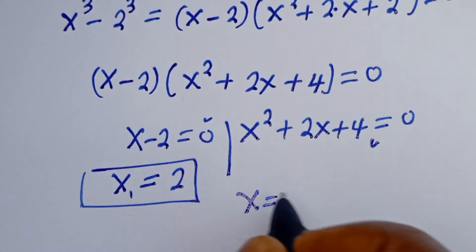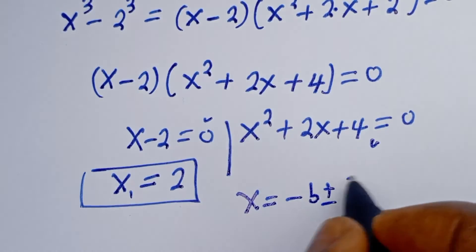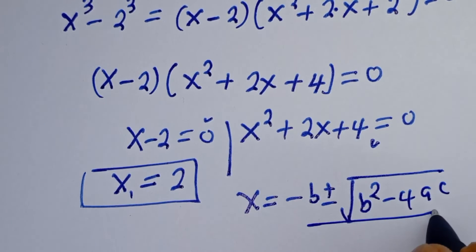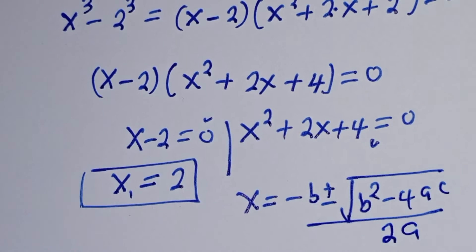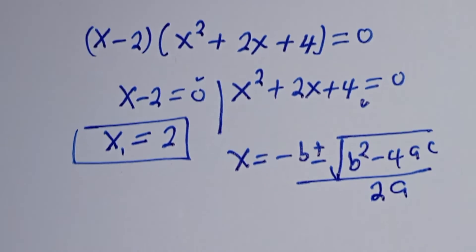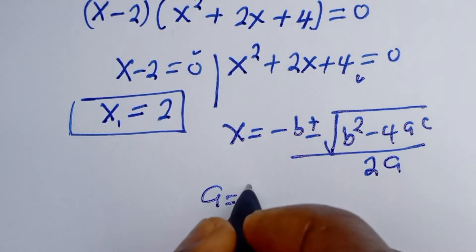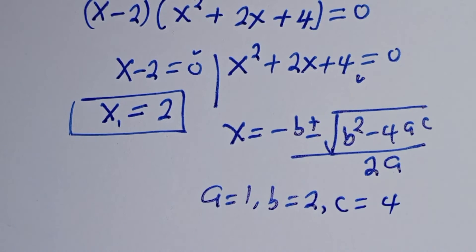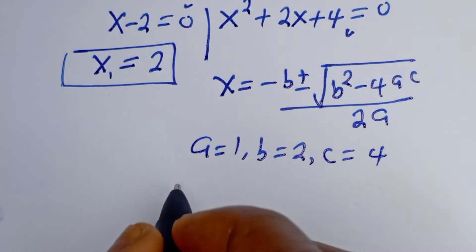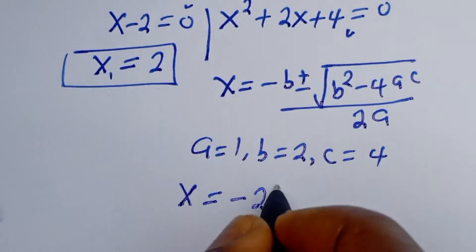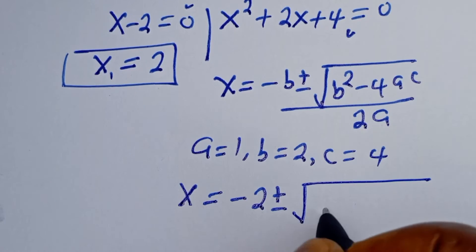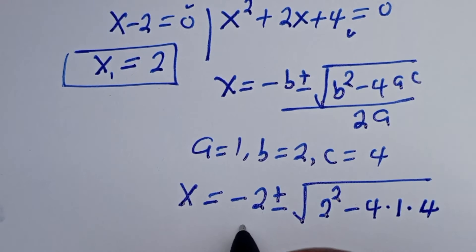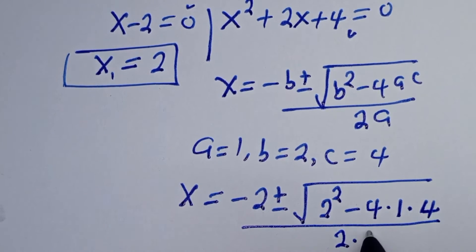Then from the second case, this is a quadratic equation. Let's use the quadratic general formula: s is equal to minus b plus or minus square root of b squared minus 4ac, over 2a. From this equation, a equal to 1, b equal to 2, c equal to 4.